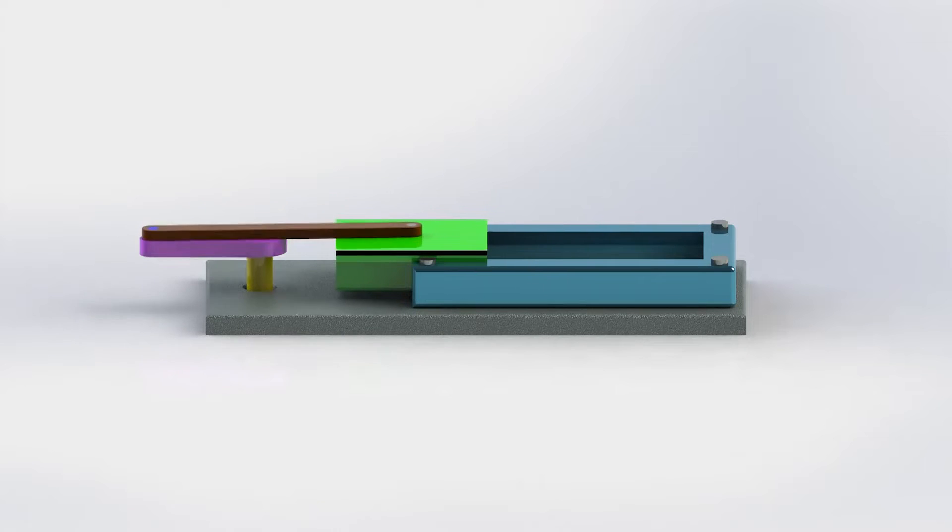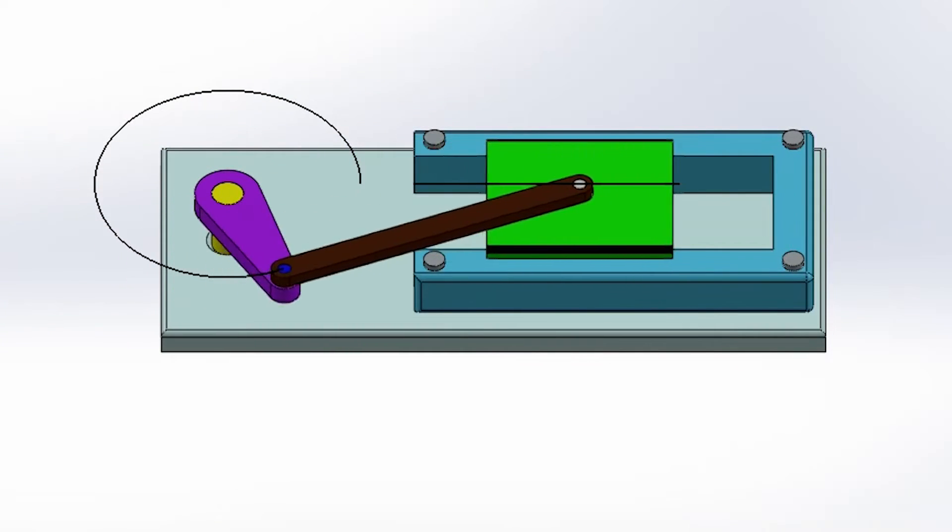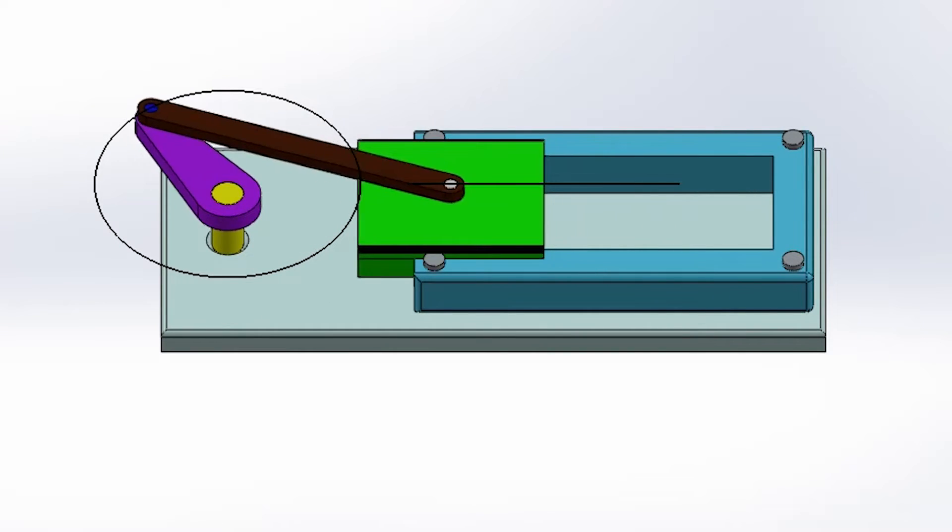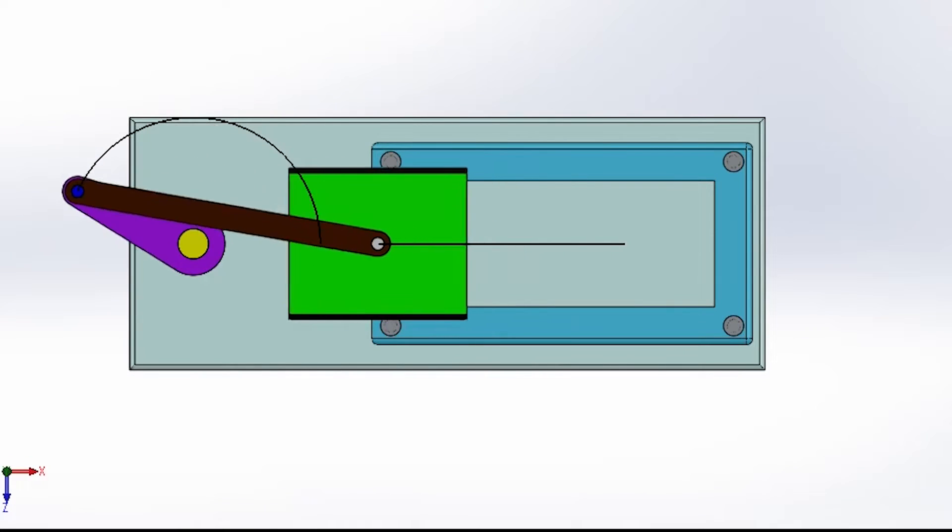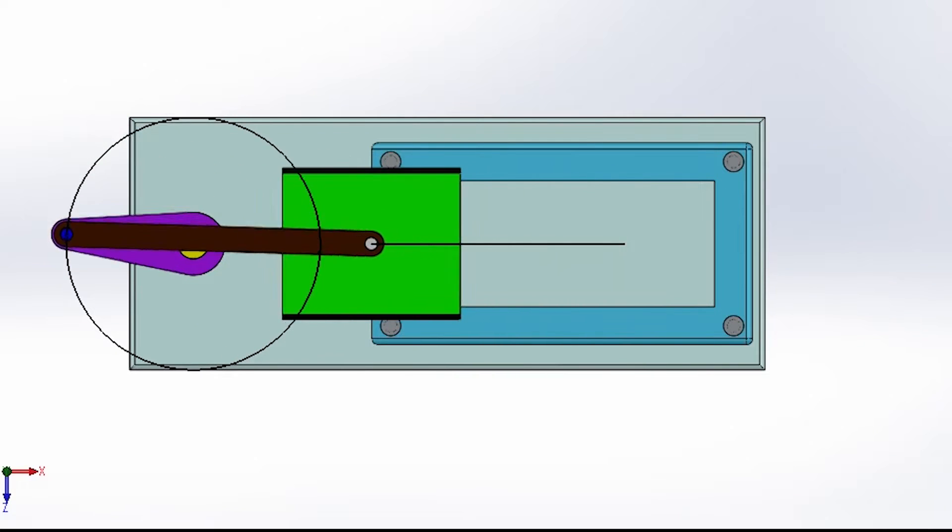The slider crank mechanism is utilized to convert rotary motion into linear motion or vice versa. Since it is a one degree of freedom system, it receives one input, either rotary or linear, and gives us one output.